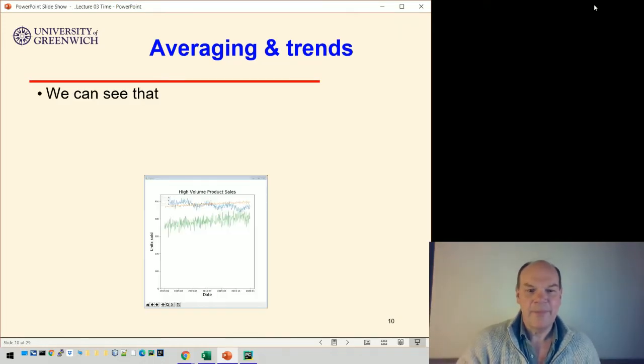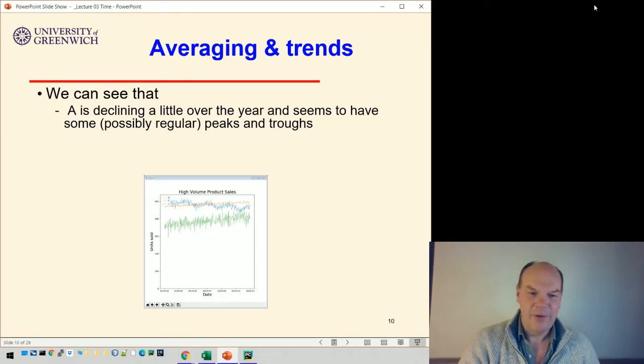Looking at the data, we can see that A is declining a bit, although it seems to have some regular peaks and troughs - that's the blue one.